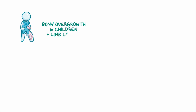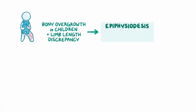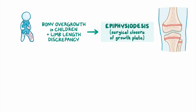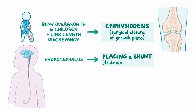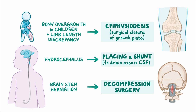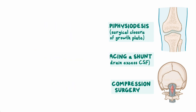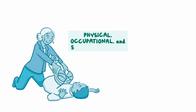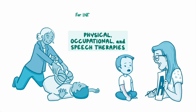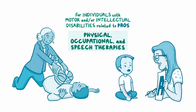Bony overgrowth in children, which results in limb length discrepancy, can be treated with epiphysiodesis, or surgical closure of the growth plate. Hydrocephalus may be treated by placing a shunt to drain excess cerebrospinal fluid. Brain stem herniation may require decompression surgery. Physical, occupational, and speech therapies might be helpful for individuals with motor and/or intellectual disabilities related to their PROS disease.